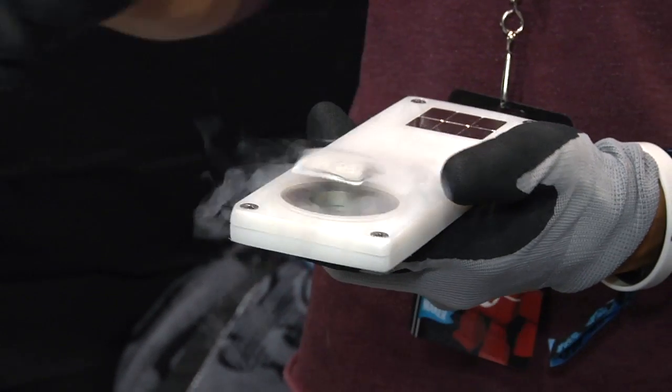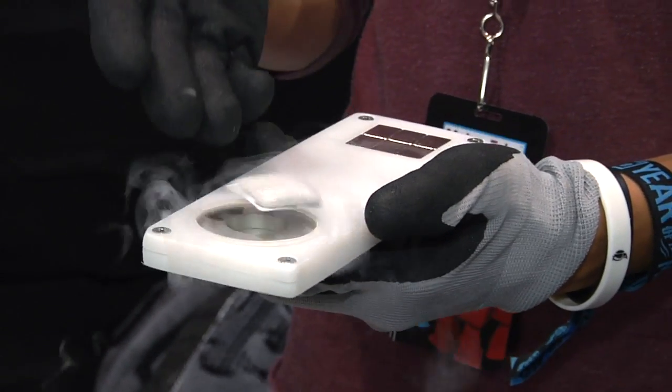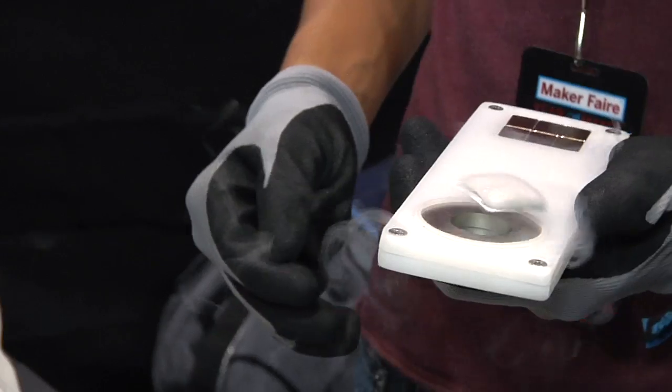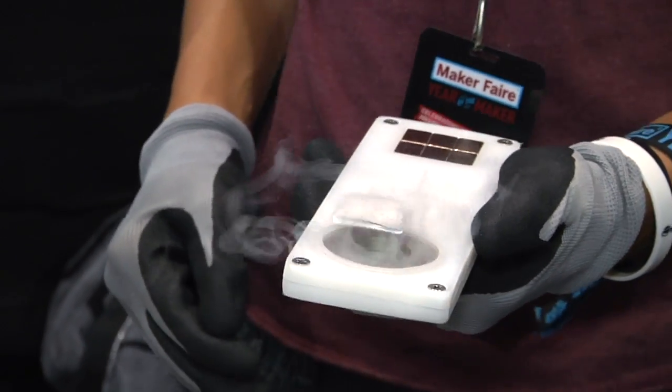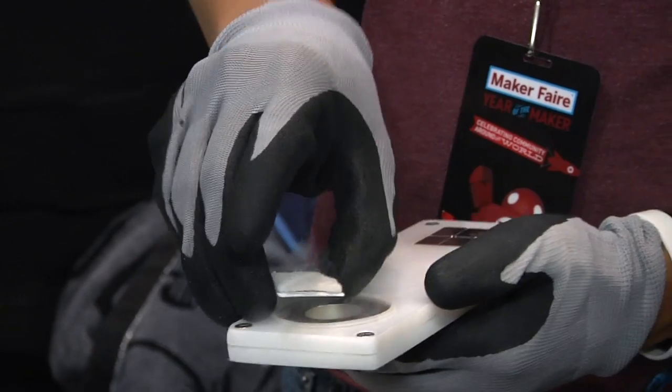We also have a circular magnet here which, when you put it on, it will spin around. So what's happening is the superconductor essentially locks onto the magnetic field like its tracks, right? Yeah, it's trapped in it.